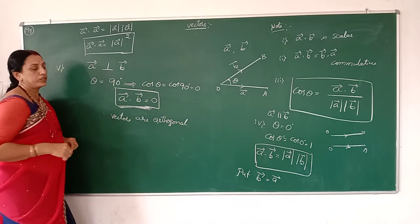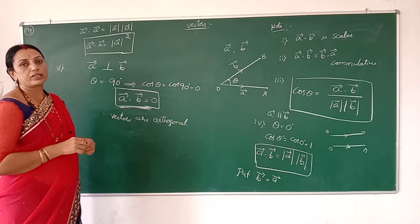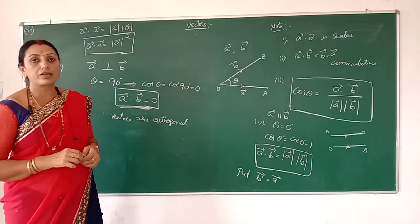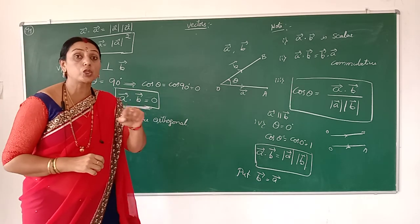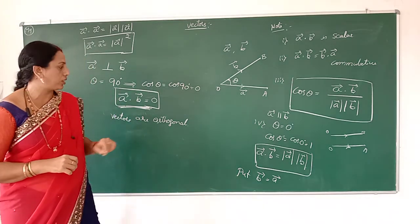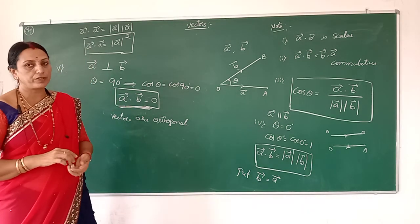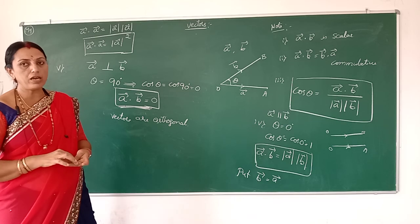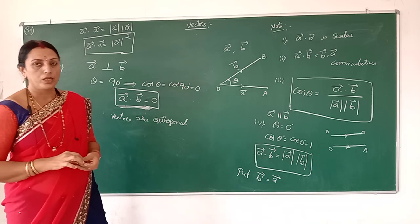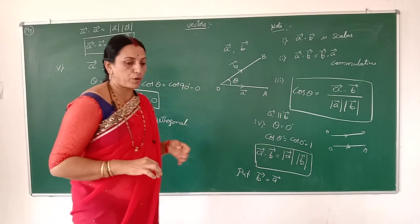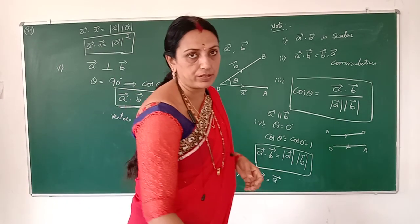To summarize the properties: first, dot product of two vectors is always scalar. Second, dot product is commutative. Third, cos θ = (A · B) / (|A| |B|). Fourth, if two vectors are parallel, A · B = |A| |B|; if equal vectors, A · A = |A|². Fifth, if two vectors are perpendicular, A · B = 0. To prove vectors are perpendicular or orthogonal, their dot product must equal zero. These are some properties of dot product of vectors.